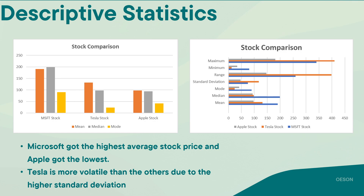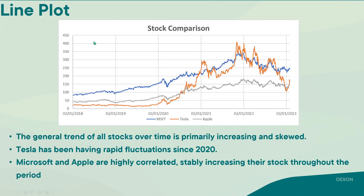To get to know more about the stock performance throughout the period, we can look at the line plot here. Generally, the trend of all the stocks over time is primarily increasing. Tesla, the orange line, has been having rapid fluctuations in 2020, while Microsoft and Apple are highly correlated and are stably increasing their stock throughout the period.